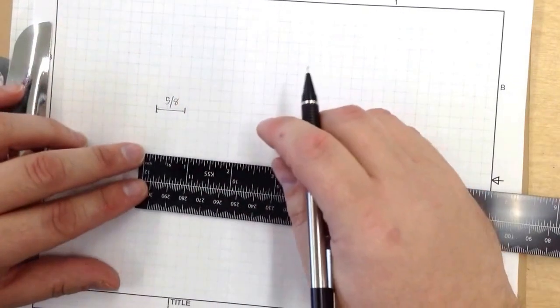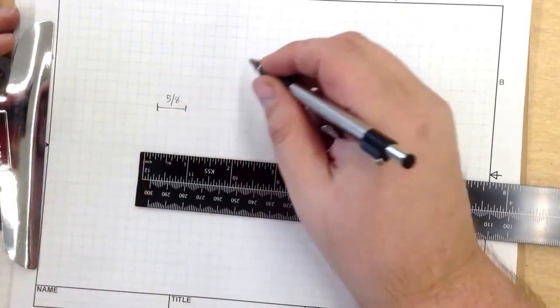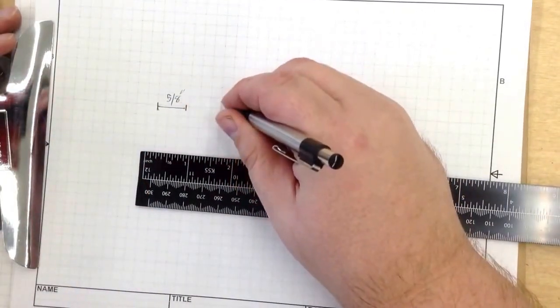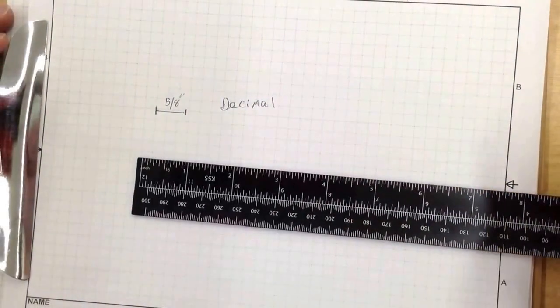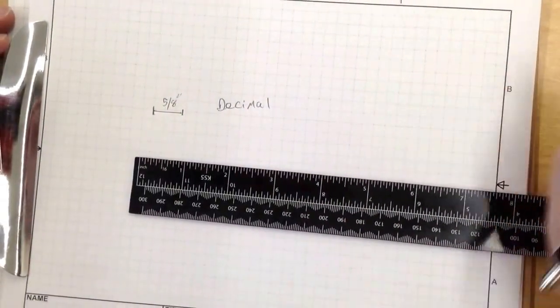Now let's say someone says that's 5 eighths of an inch but I want it in a decimal. How do you convert 5 eighths into a decimal?